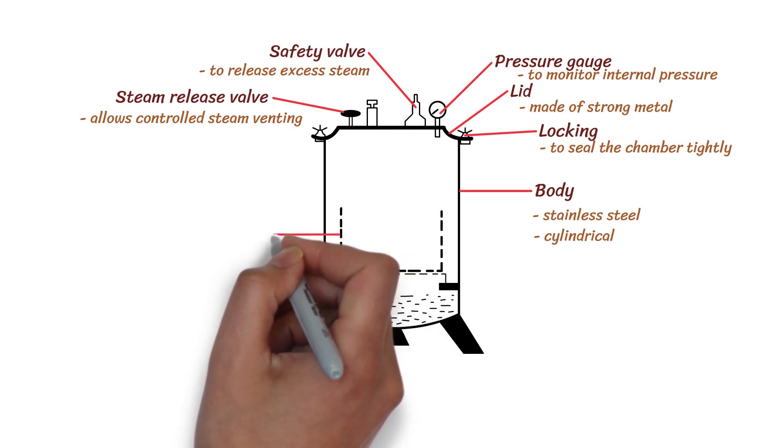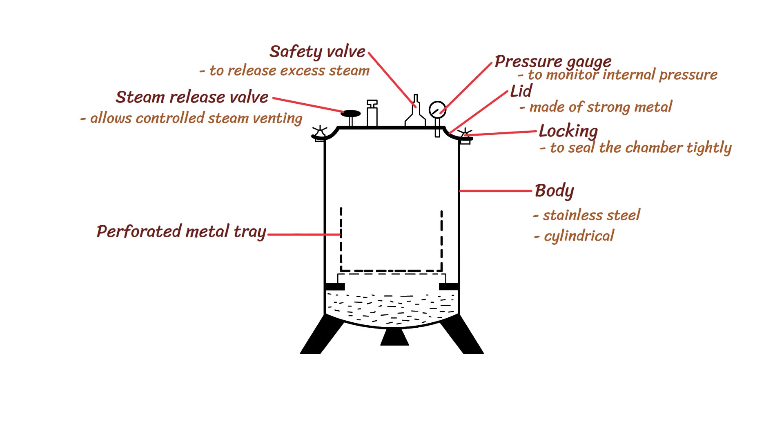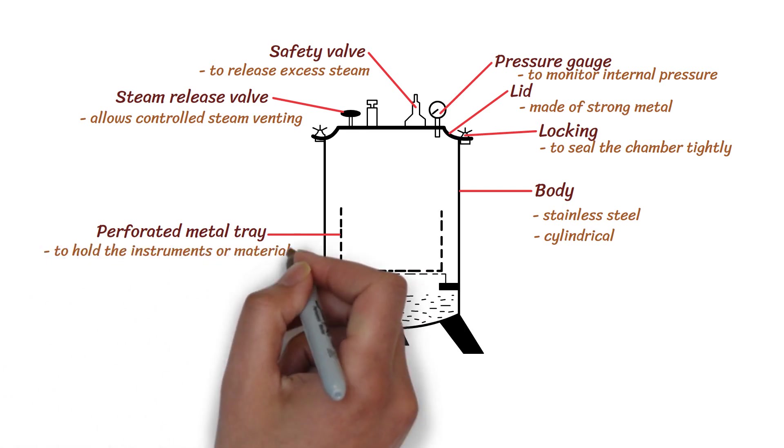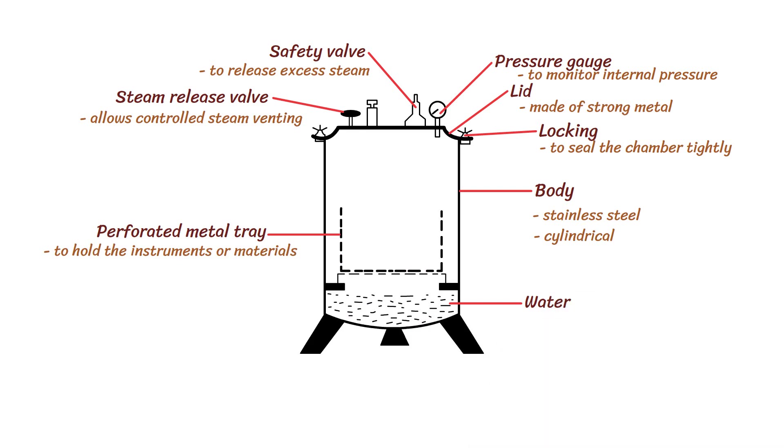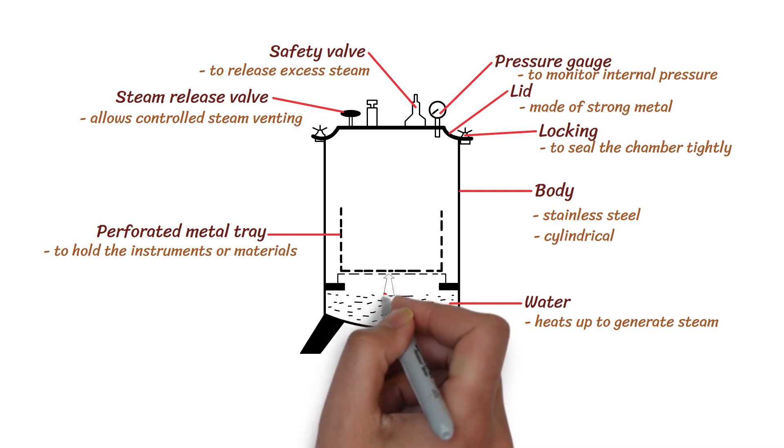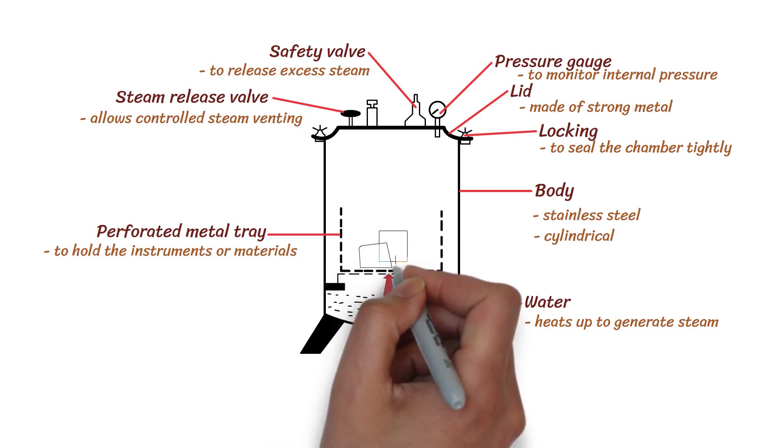Inside the chamber, there is a perforated metal tray to hold the instruments or materials to be sterilized. There is water at the base of the autoclave that heats up to generate steam for sterilization. The items need to be kept above the water level to ensure steam circulation.